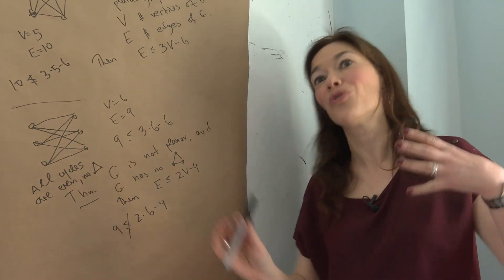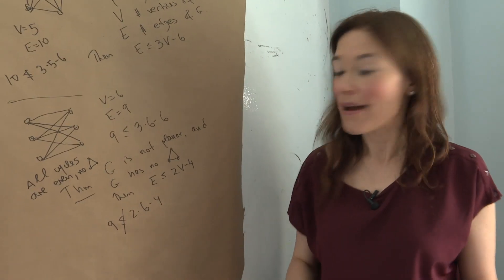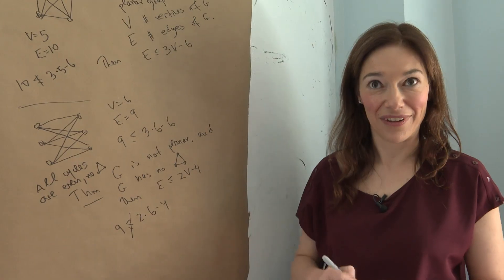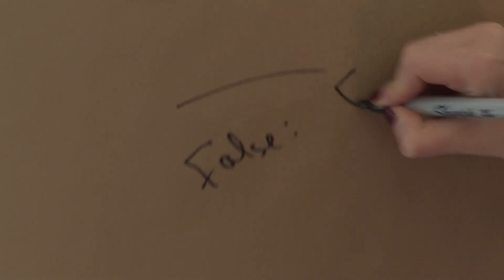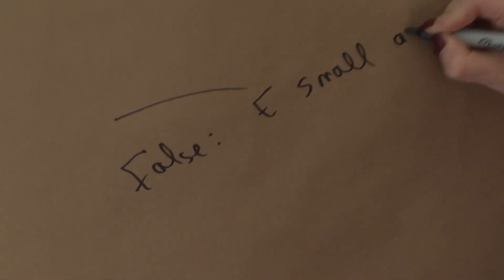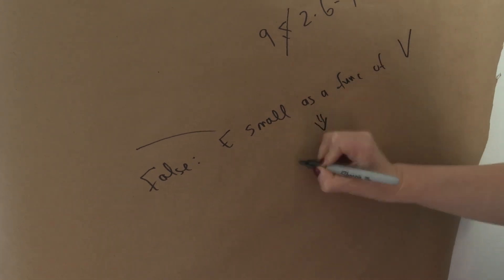And maybe it's true that if I give you a graph, it has a bunch of vertices, and there are not too many edges, then you can embed it. But that doesn't work, unfortunately. So, false, E small as a function of V implies planar.